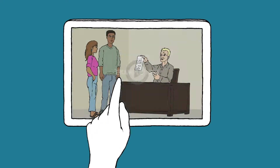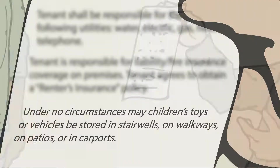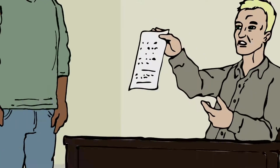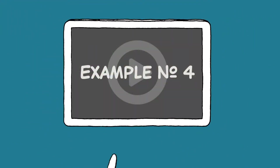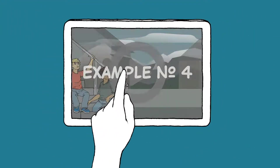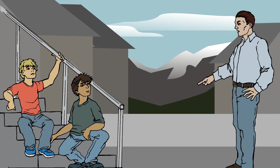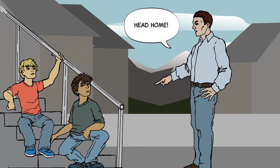Having restrictions on children's belongings. Setting curfew rules for children where there is no documented evidence of a legitimate safety concern. [Landlord]: You know the rules. All kids under 18 have to be inside after 9 p.m. Head home.